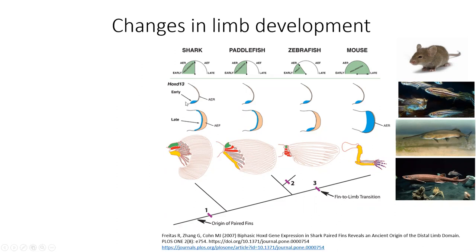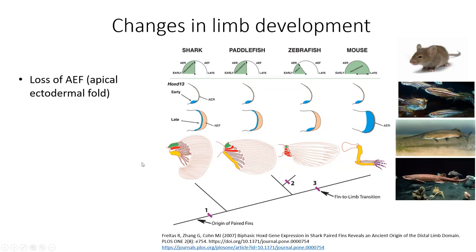Looking at HoxD13 expression: early in fin and limb buds it's in the posterior region in all these animals. In the late phase, in zebrafish it stays in the posterior region, while in the mouse there is an inversion — HoxD13 spreads all the way to the anterior part. This also happens in paddlefish and shark, although to a much lesser degree. What's happened is that we lose the apical ectodermal fold and the fin rays — when you look at your own hand, you don't see any fin rays — and instead we get extended development.